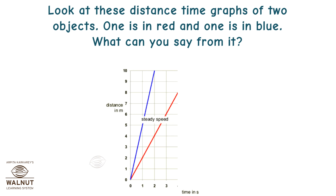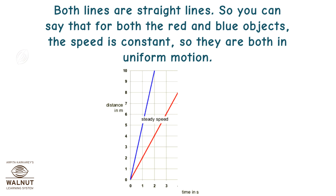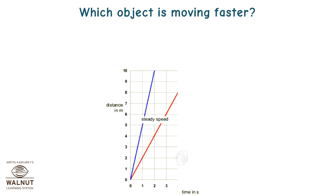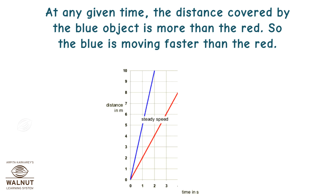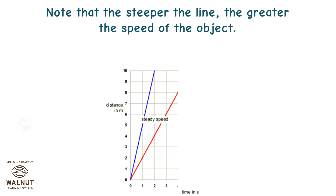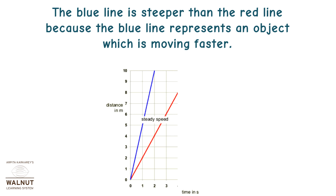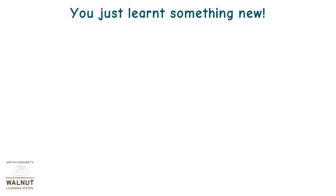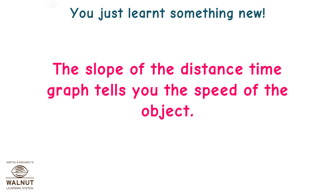Look at these distance-time graphs of two objects — one in red and one in blue. Both lines are straight lines, so both the red and blue objects are at constant speed, meaning they are both in uniform motion. Which object is moving faster? At any given time, the distance covered by the blue object is more than the red, so the blue is moving faster. Note that the steeper the line, the greater the speed. The slope of the distance-time graph tells you the speed of the object.